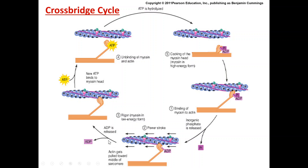At this point, ADP is released and the myosin head is in what would be considered its low energy form. It is in rigor — stiff and physically bound to actin — and it requires ATP to be released. So it requires a new energy source to detach from this bind. When ATP binds to the myosin head, we have unbinding of myosin and actin and we effectively go back to the start: ATP is hydrolyzed into ADP and inorganic phosphate, a cross-bridge forms, and the energy from those bonds fuels the power stroke — and the cycle continues.